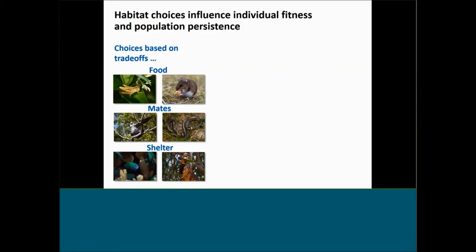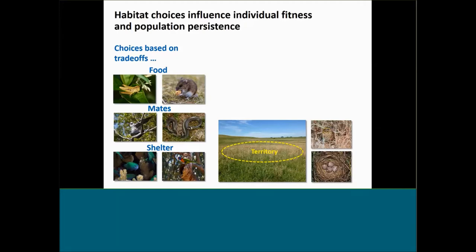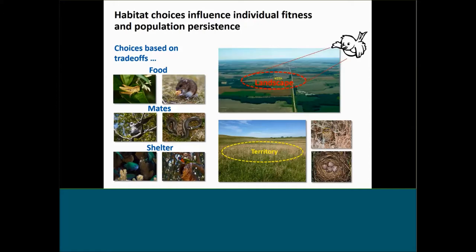Animals select habitats by making a series of choices, and these choices are based on tradeoffs between factors such as availability of food, opportunities to reproduce, and access to shelter. These decisions are really important because they influence an individual's fitness as well as the population's persistence. Most habitat studies tend to focus on how animals make fine-scale habitat choices — for a grassland bird, this might mean looking at where they're establishing a territory, what microhabitats they use to build a nest, rear offspring, and forage.